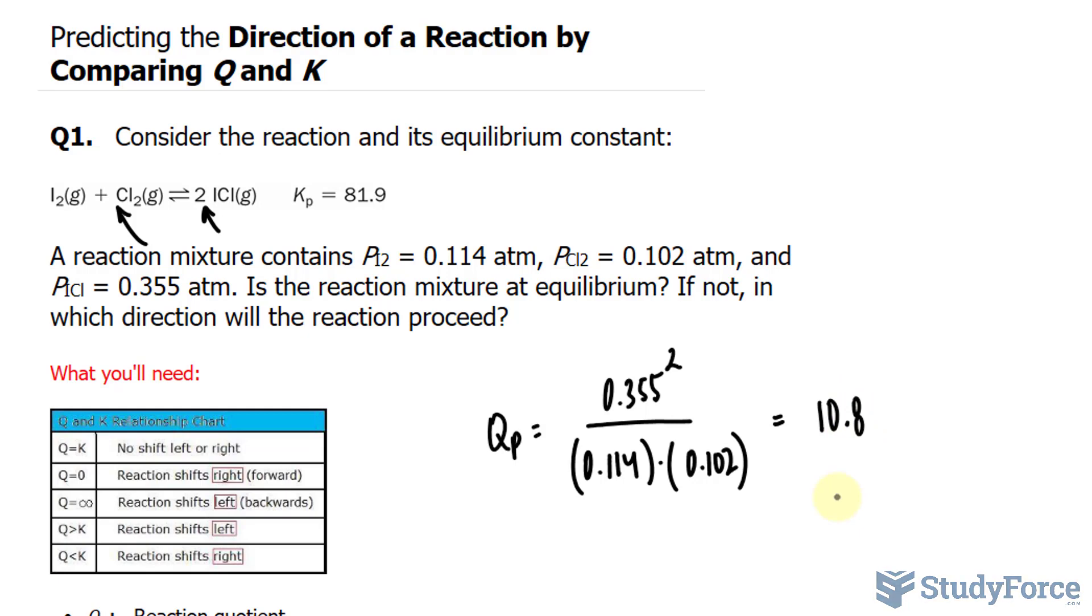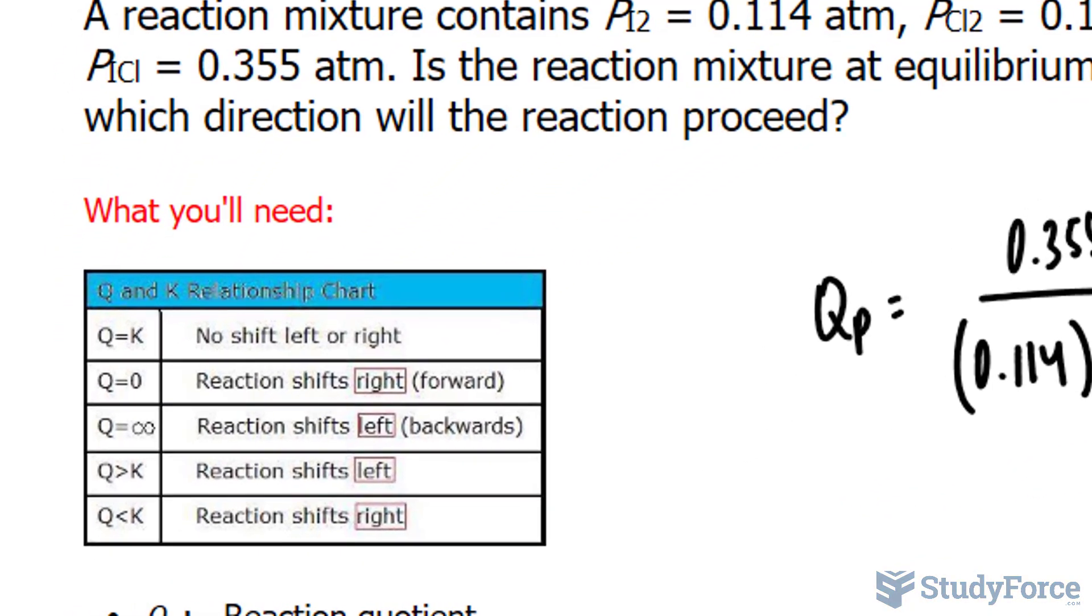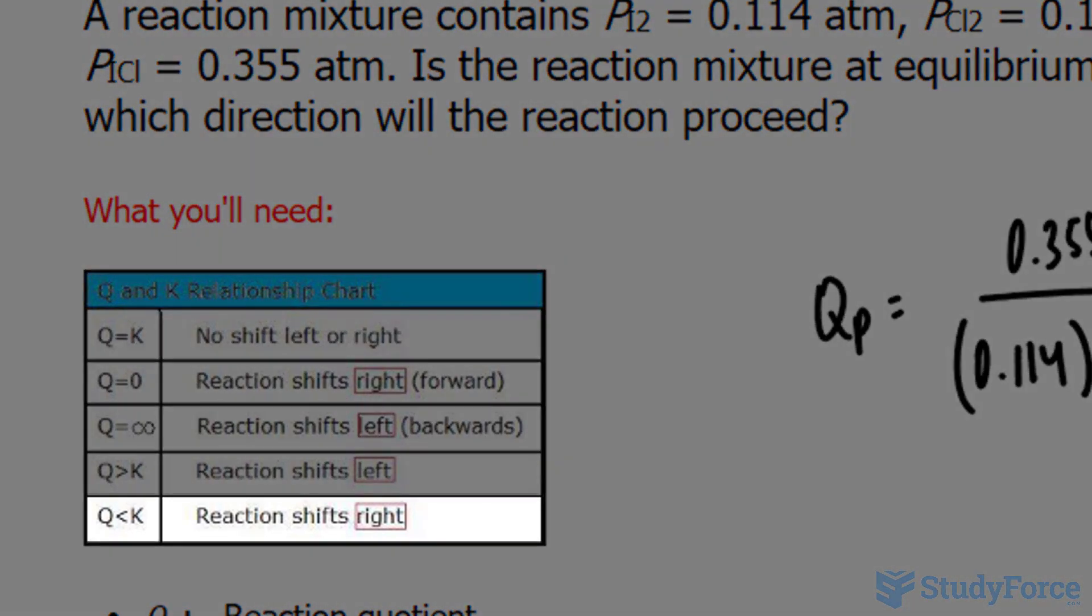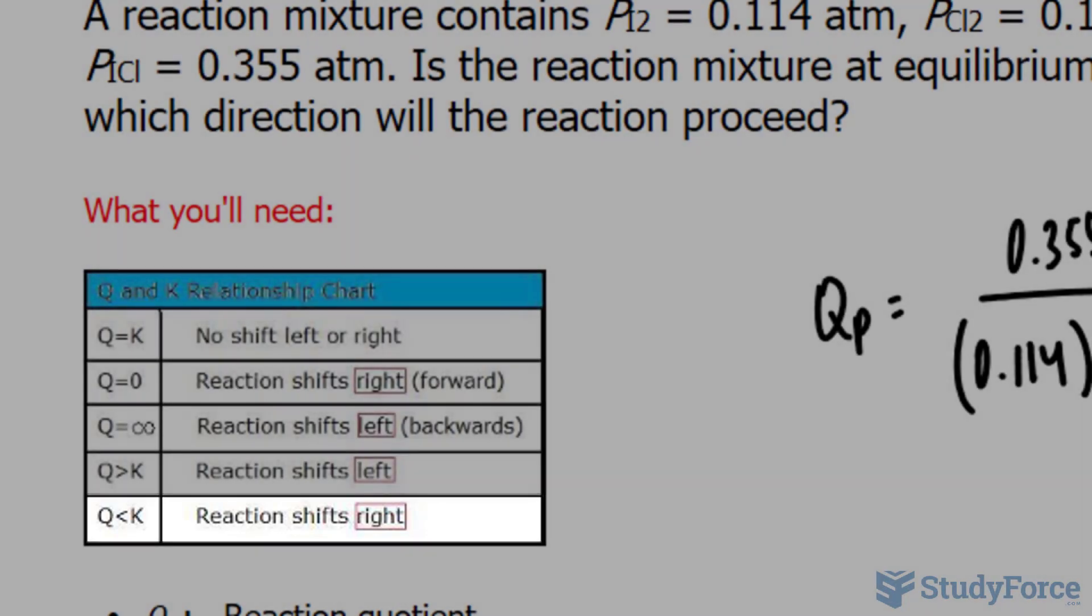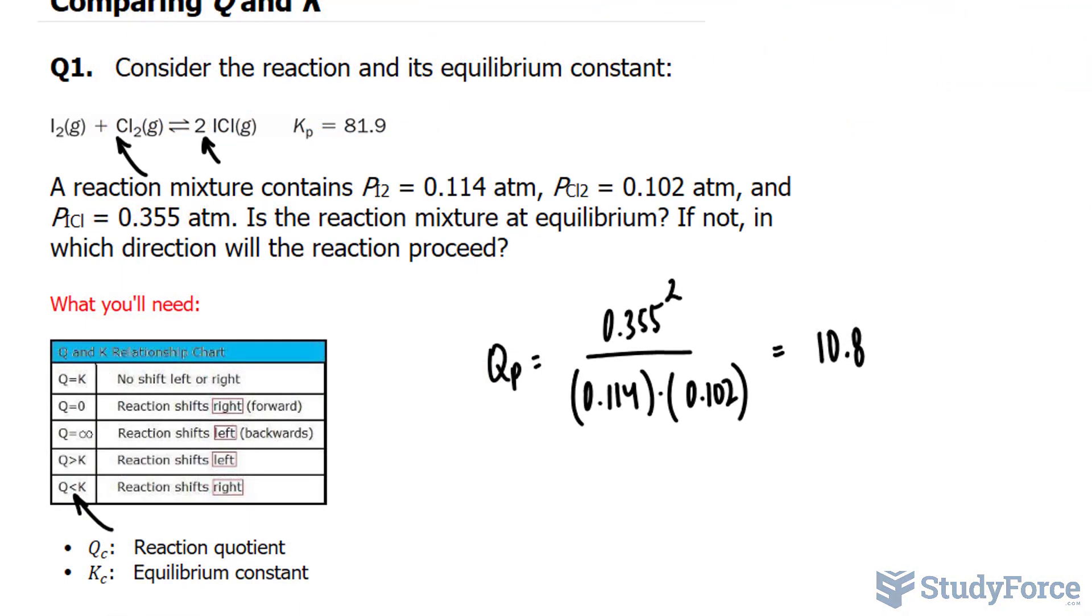As you can see, QP is less than KP, so the reaction is not at equilibrium and will proceed to the right. Notice the chart underneath, that when Q is smaller than K, the reaction shifts to the right. That's the answer to question number one.